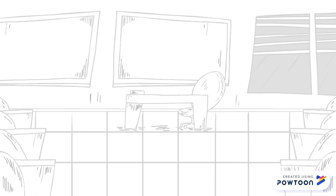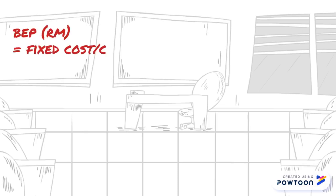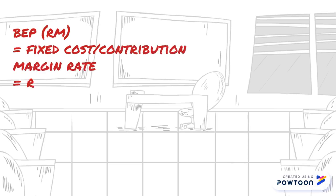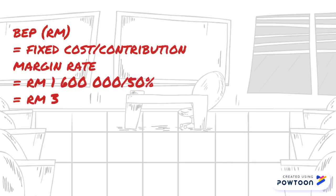Next, for break-even in RM, we must divide fixed cost by contribution margin ratio, which is RM1,600,000 divided by 50%, and we get RM3,200,000.